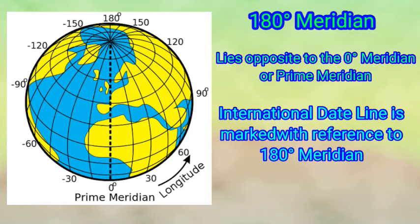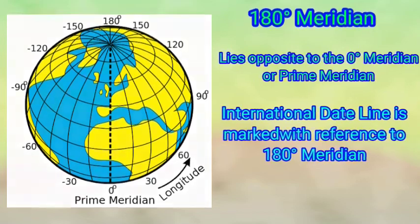The International Date Line is also marked with reference to the 180° Meridian, which is why it is an important meridian among all 360. All pairs of opposite meridians form a great circle, just like the Equator, and divide the Earth into two equal parts. All great circles are very useful for finding the minimum distance between any two places on the surface.